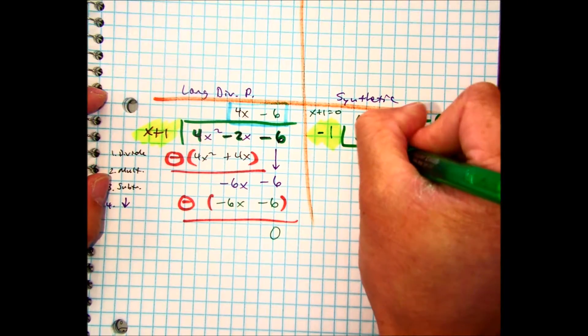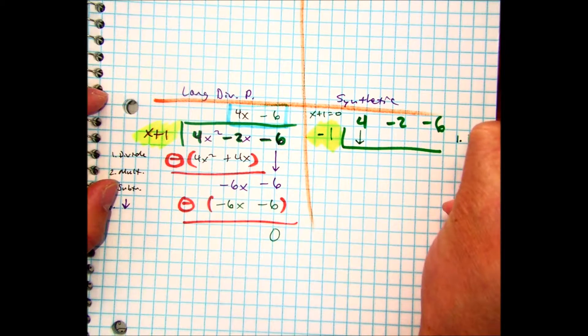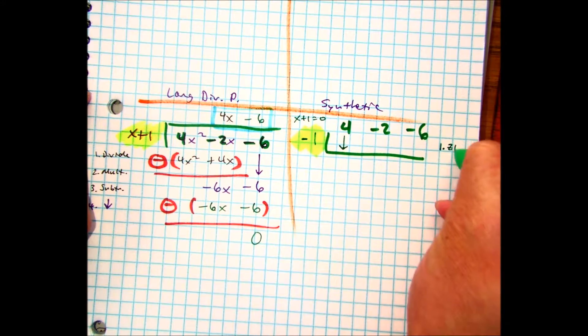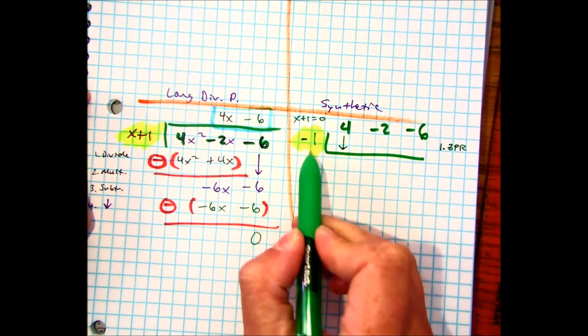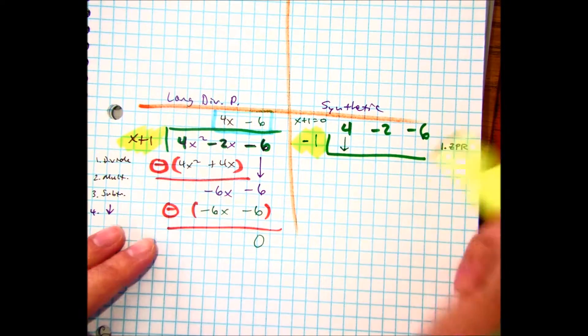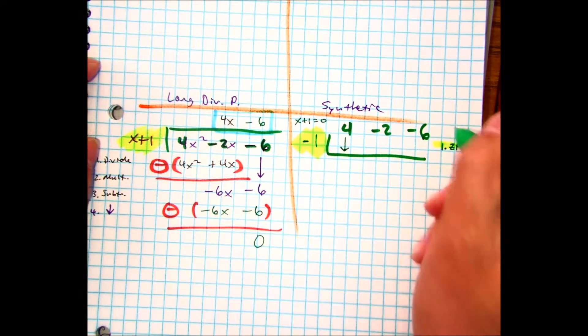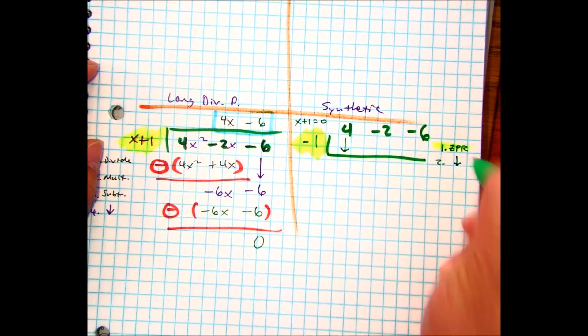So the first thing I'm going to do is I'm going to bring down the first term. Or, I'm going to write, sorry, ZPR, zero product rule. Do you see that in yellow? Highlight that in yellow so you know where I got it from. And then the second thing I'm just going to bring down the first term.